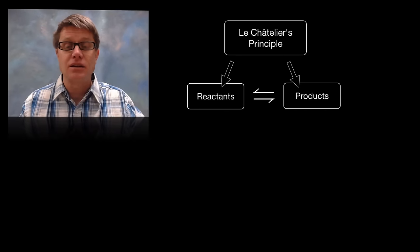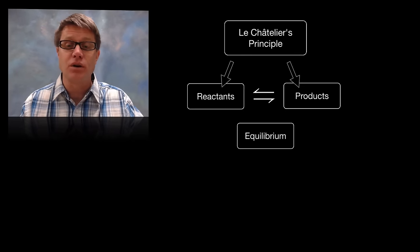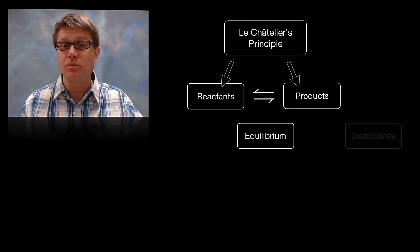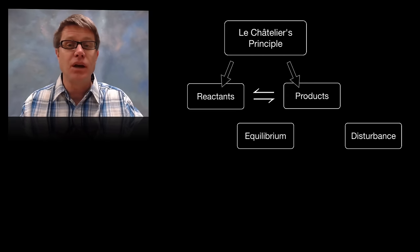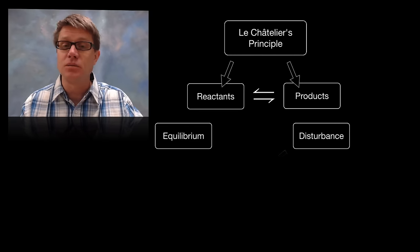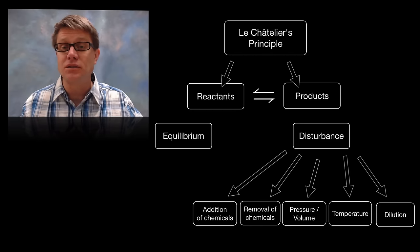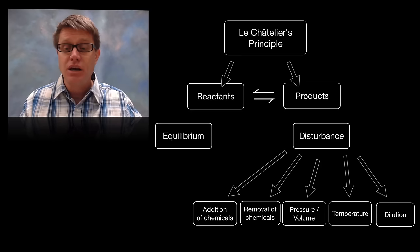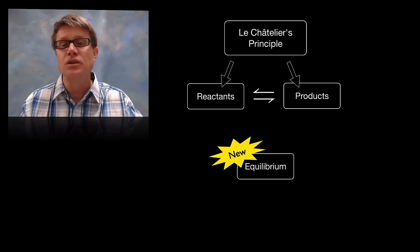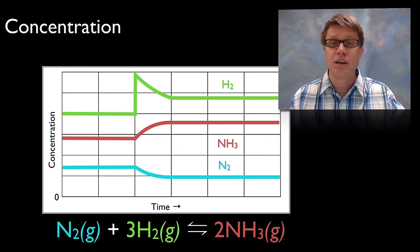In any reversible reaction where we have reactants and products established at equilibrium, if we ever have a disturbance — and that disturbance could be adding or removing chemicals, a decrease in volume, an increase in pressure, an increase or decrease in temperature, or even dilution — a new equilibrium is going to be reestablished.